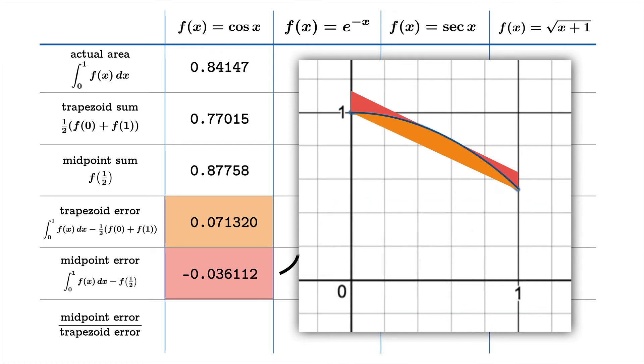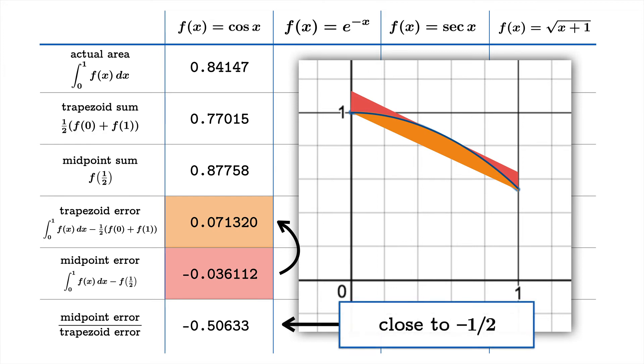And now finally, we're going to take the quotient of the midpoint error to the trapezoid error. We got about negative 0.50633. One thing to notice here is this is close to negative one-half. We're going to keep our eye on this throughout these examples.